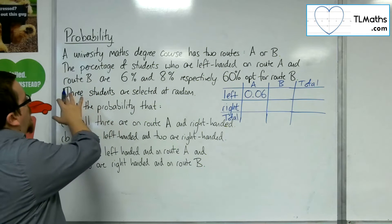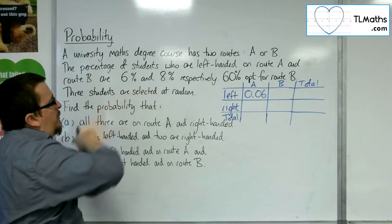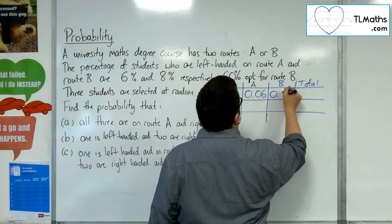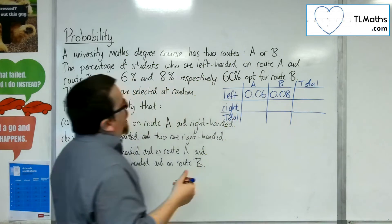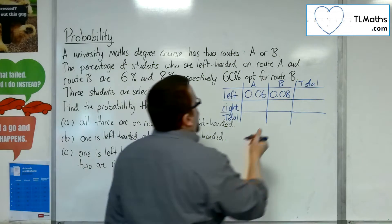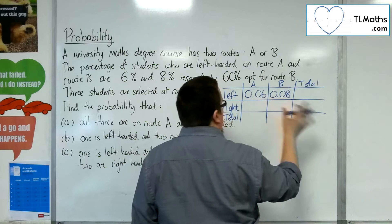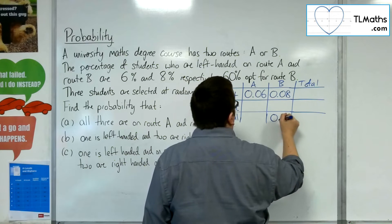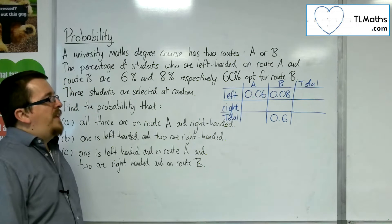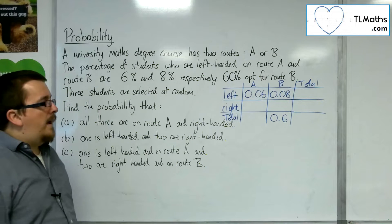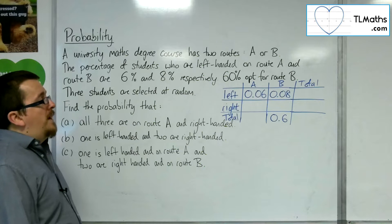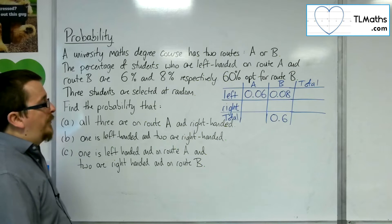We also know that route B has 8% left-handed, so that's 0.08. And we're told that 60% opt for route B, so the total of left-handed and right-handed people on route B will be 0.6. That's the information I have, so now I want to fill everything else in.